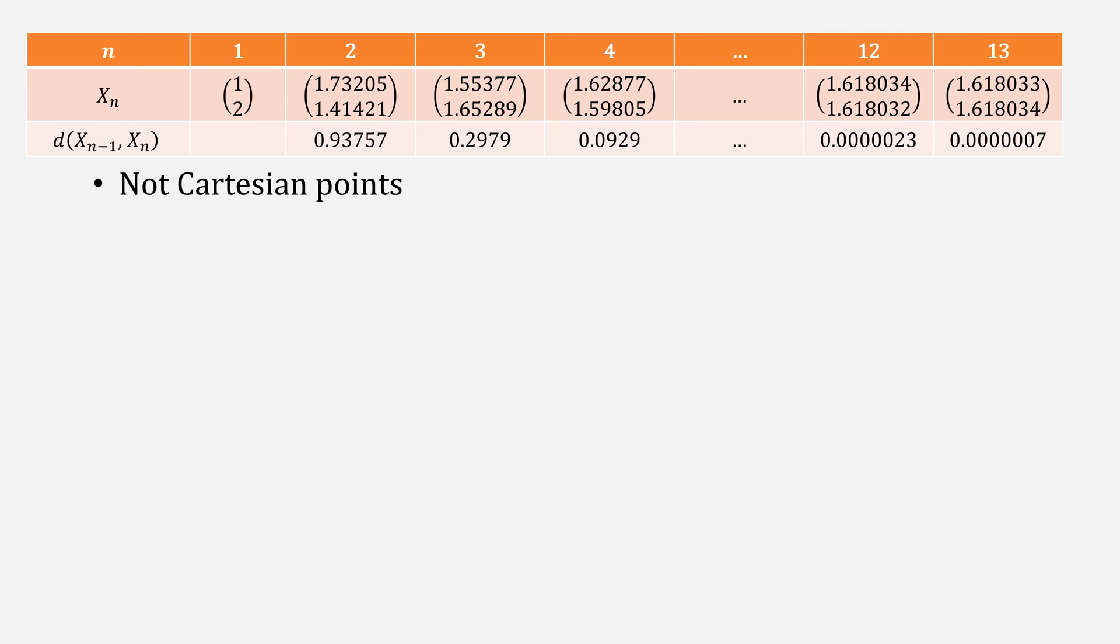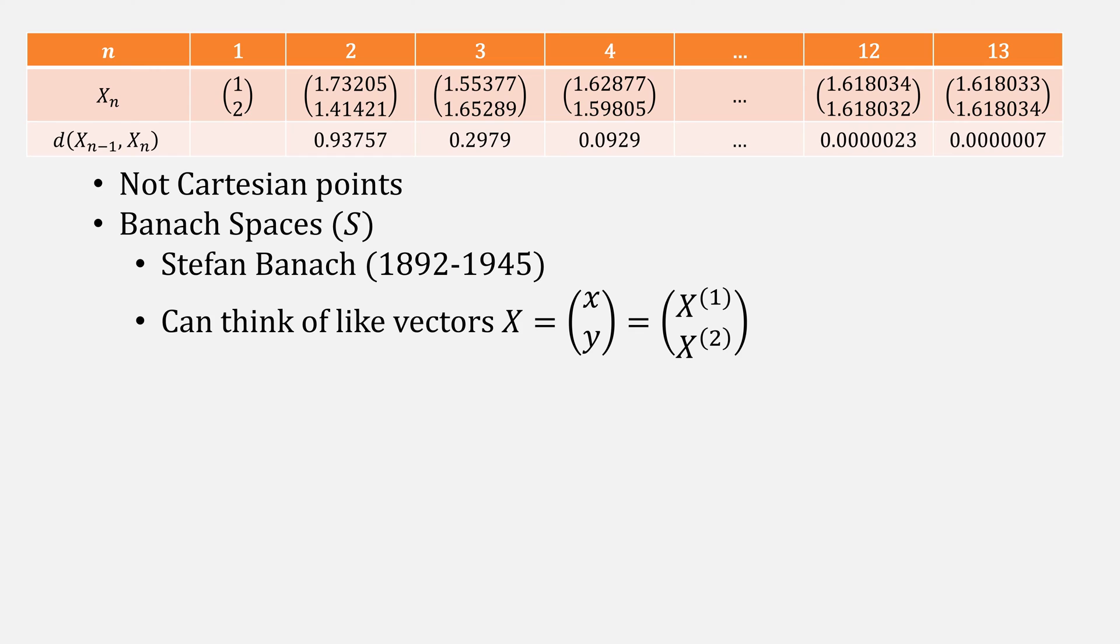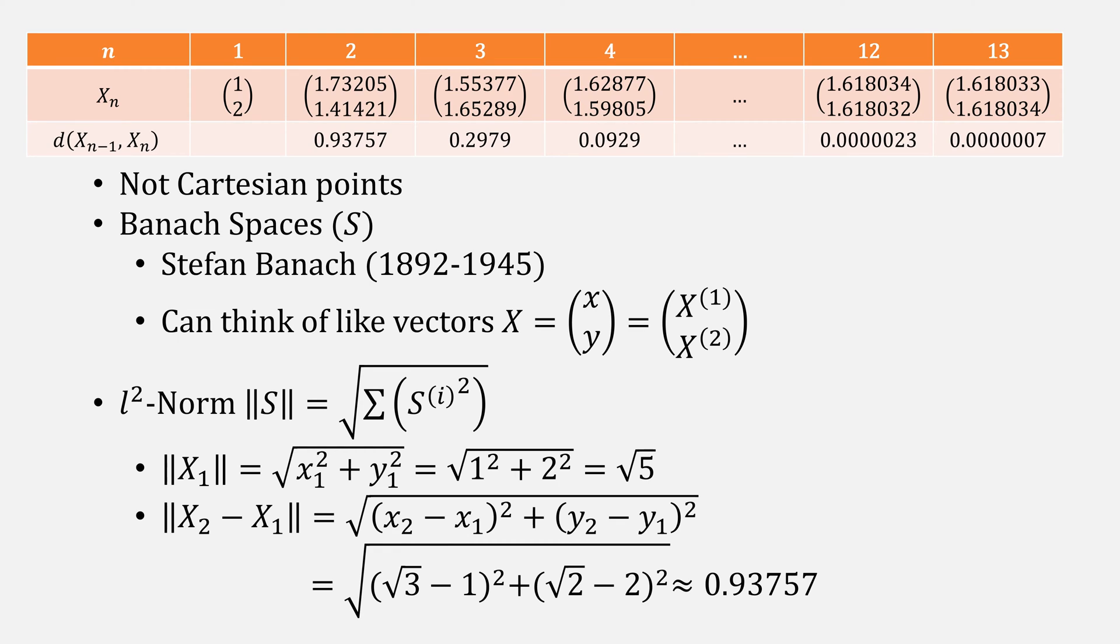The trouble is that these are actually not Cartesian points. They're Banach spaces, named after Stefan Banach. We can think of them more like vectors, and to compute the norm of a vector, in this case the L2 norm, we'll simply take the square root of the sum of squares. For example, the norm of x1 is equal to the square root of 5, and the norm of x2 minus x1 is our distance function. We know that we can stop iterating with fixed point iteration when the norm of our steps becomes less than some epsilon, or if we take our original function and rewrite it in terms of zero, we can stop it when the norm of the function at our x is less than some epsilon, or whenever we reach some maximum number of iterations.